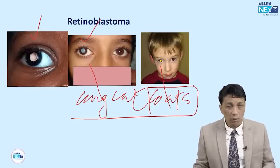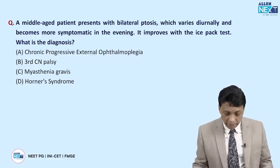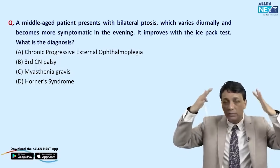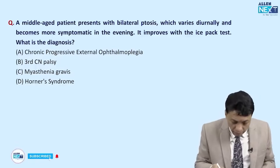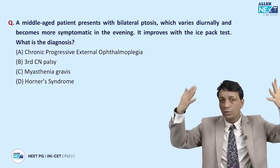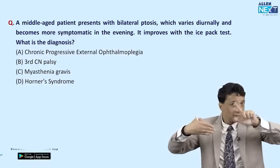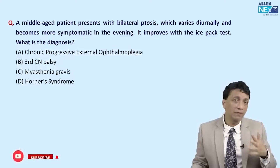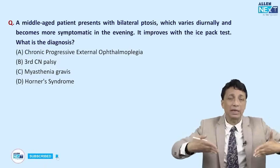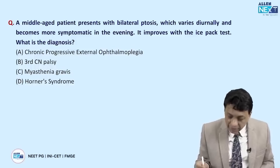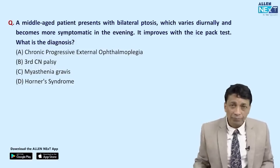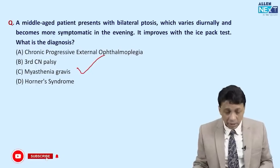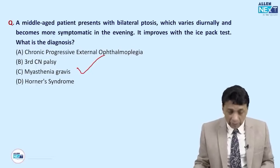A middle-aged patient presents with bilateral ptosis — lids are down — which varies diurnally, meaning the ptosis increases or decreases according to the time of day, becoming more symptomatic in the evening. This is called lid fatigability, or fatigable ptosis, also called fluctuating ptosis — it increases in the evening and improves with the ice pack test. The answer is myasthenia gravis.